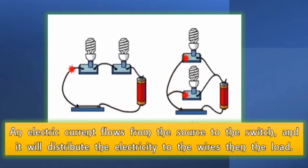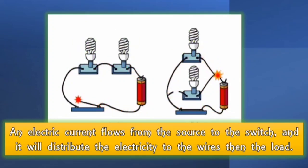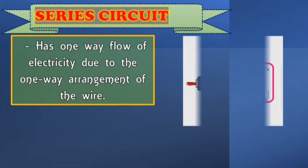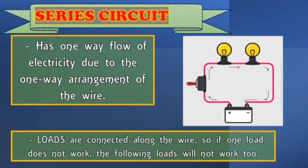As you can see in this illustration, an electric current flows from the source going to the switch, and it will distribute the electricity through the wires, then to the load. So in a series circuit, it has a one-way flow of electricity due to the one-way arrangement of the wire. Look at the illustration — loads are connected along the wire. So if one load does not work, the following loads will not work too.